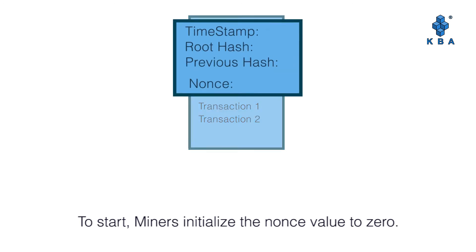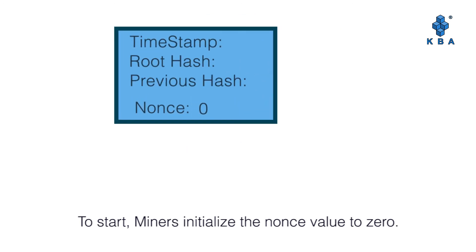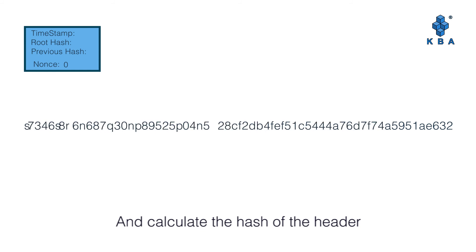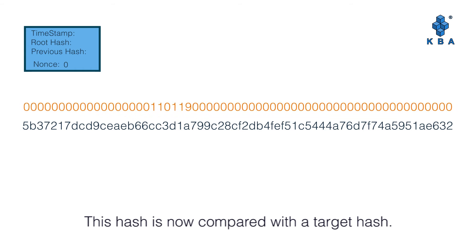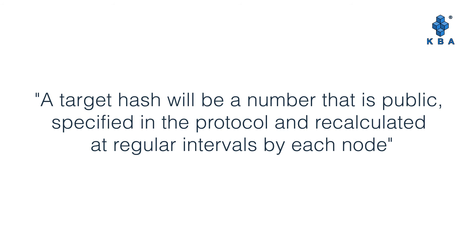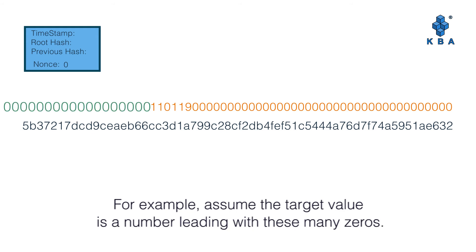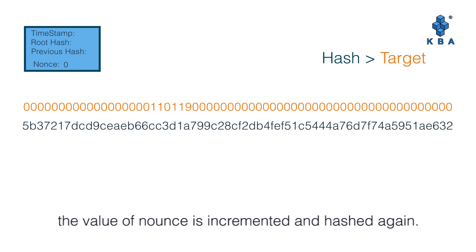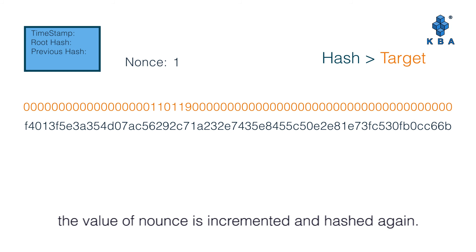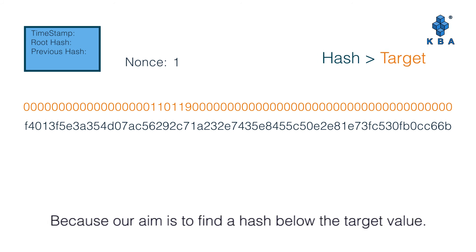To start, miners initialize the Nonce value to 0 and calculate the hash of the header. This hash is then compared with a target hash. A target hash is a number that is public, specified in the protocol, and recalculated at regular intervals by each node. For example, assume the target value is a number leading with a certain number of zeros. If the hash is higher than the target, the value of the Nonce is incremented and hashed again.